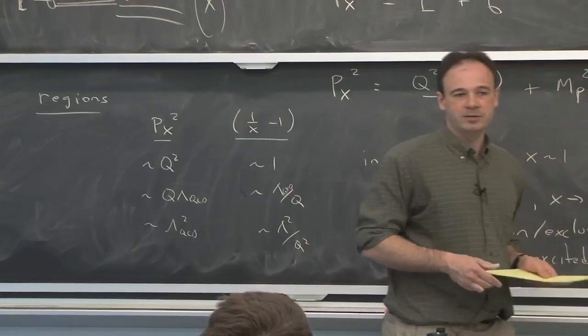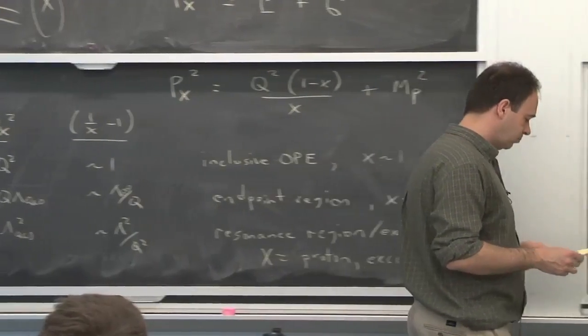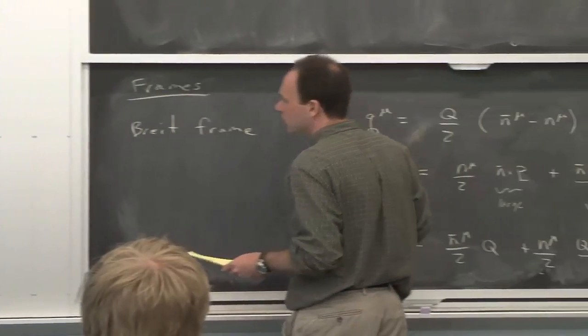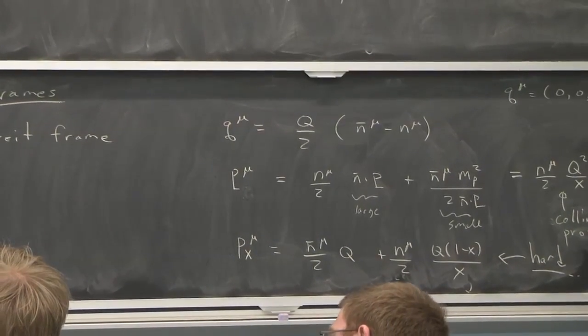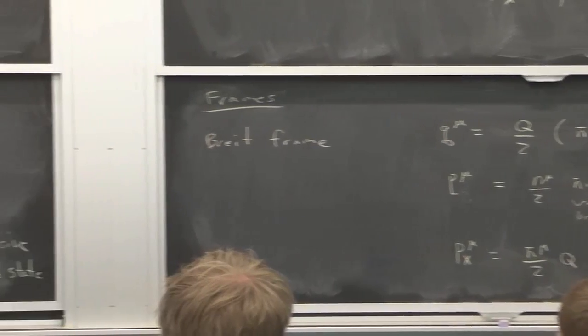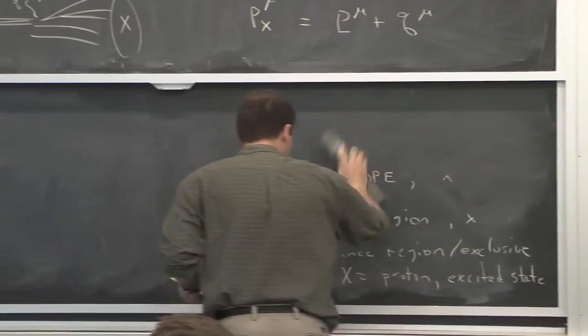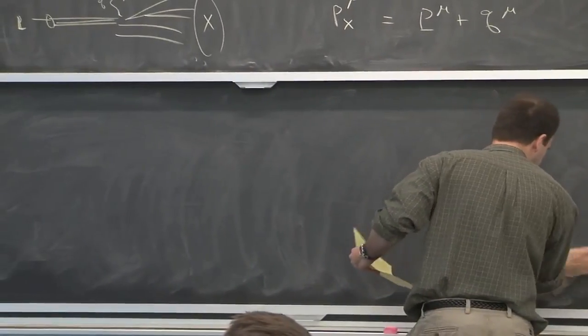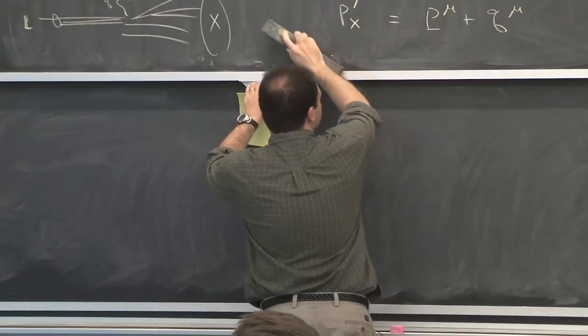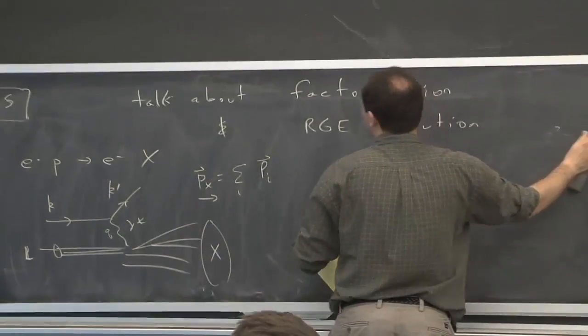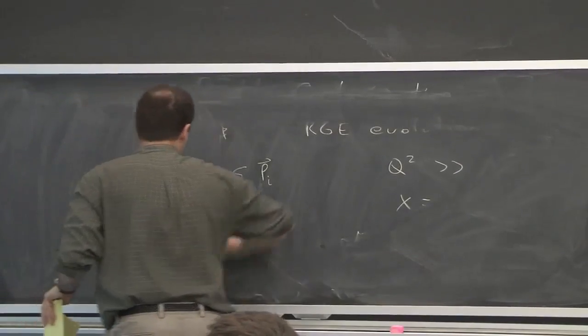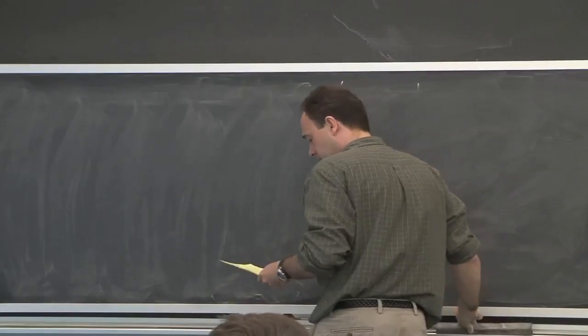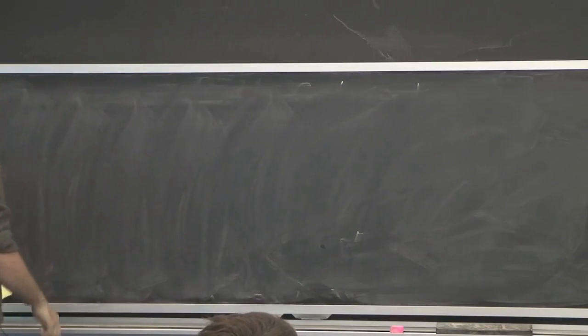And we can say that we have collinear modes and hard modes. And then we just want to write down an effective theory for those two things. You could also do an analysis of DIS in the rest frame of the proton. That's another case. And actually, the final result that you would get would be the same as what we'll get from this frame. But this frame is actually a little easier.